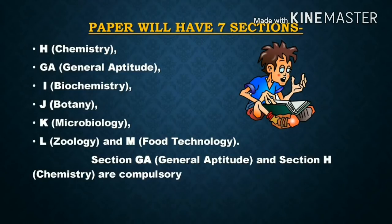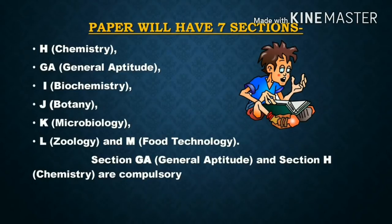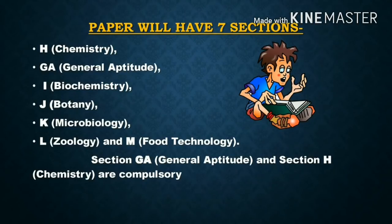You cannot skip the General Aptitude and Chemistry portions as they are compulsory. For the remaining five subjects, you get a selection option and should choose according to your branch and interest. Since I was a student of Microbiology with both Bachelor's and Master's in the subject, my first selection was Microbiology and along with that I attempted the Biochemistry portion, preparing both subjects thoroughly, as well as General Aptitude and Chemistry.